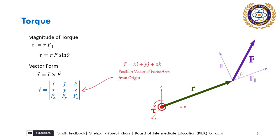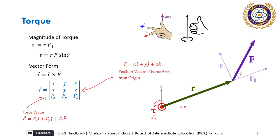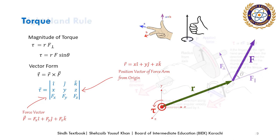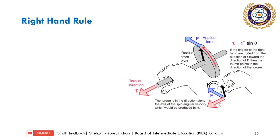In the determinant form, the first row contains unit vectors i, j, k; the second row is the position vector (force arm) with components x, y, z from origin; and the third row is force with components Fx, Fy, Fz. For direction, we use the right-hand rule: the index finger represents the first vector (arm), the middle finger the second vector (force), and the thumb gives the direction of the result. If the thumb points upward, the rotation is anti-clockwise; if downward, it is clockwise. So we can determine the torque direction — clockwise or anticlockwise — using the right-hand rule.